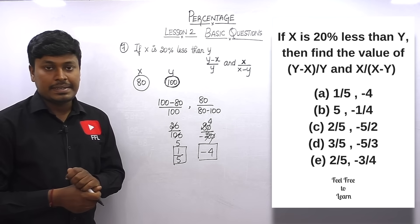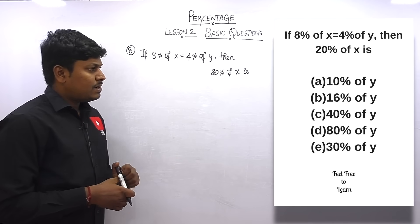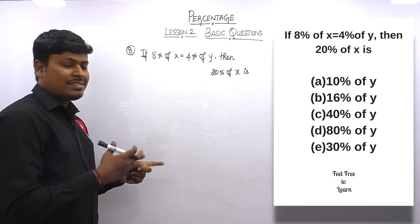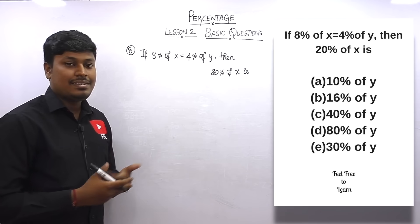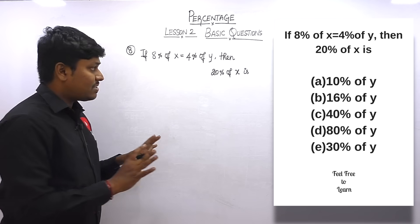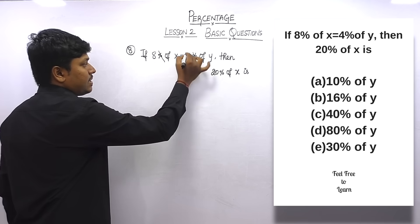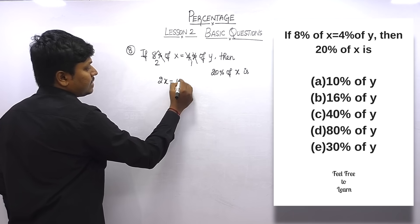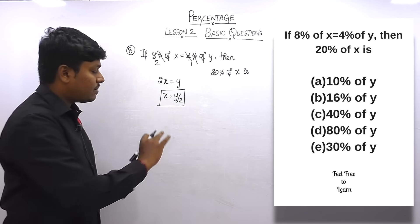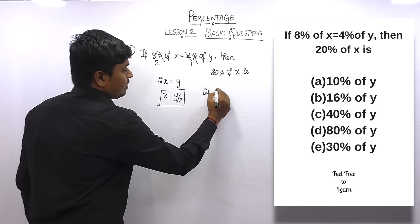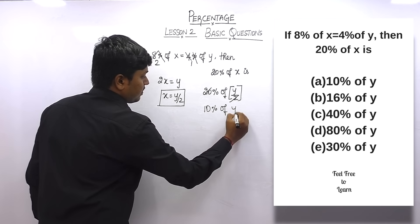Question number eight: if 8% of x = 4% of y, find 20% of x. Looking at the options: 20% of y or 10% of y. Traditional method: cancelling percentages, 2x = y, so x = y/2. Substituting: 20% of (y/2) = 10% of y.